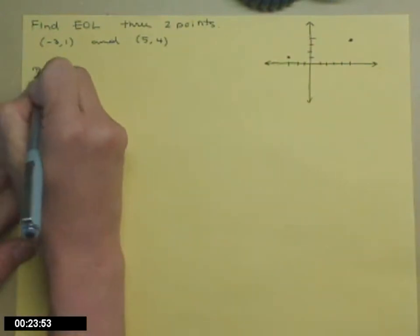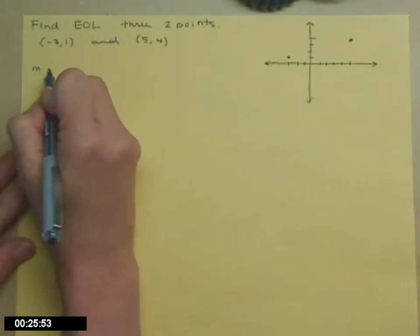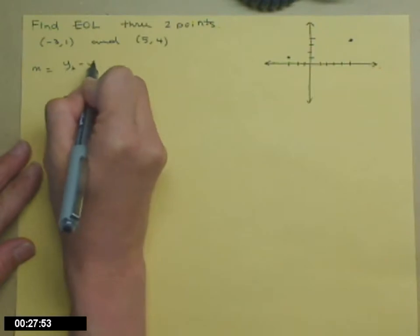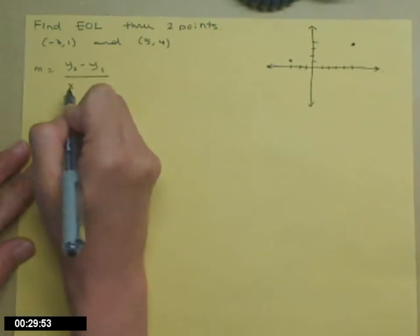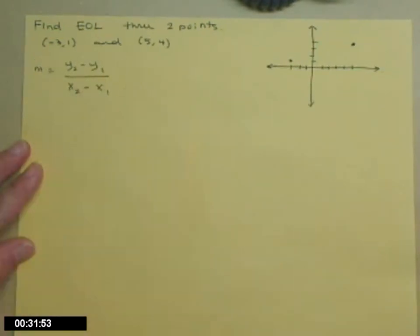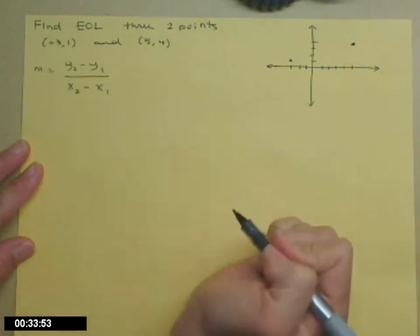The first thing I need to know is what is my slope m. Remember that's change in y, so y₂ - y₁ divided by change in x, x₂ - x₁. It doesn't matter who's who as long as you're consistent.